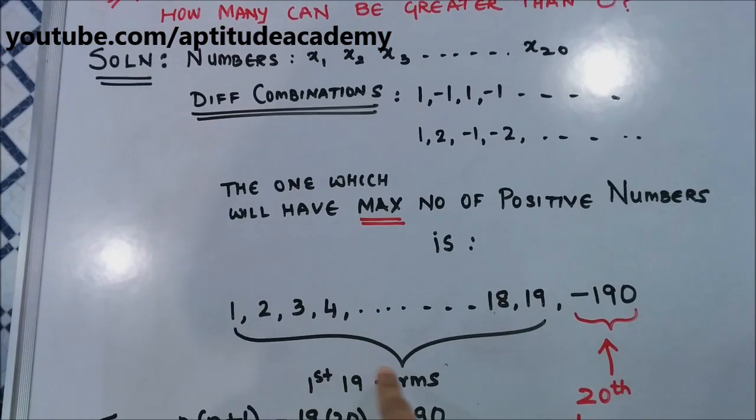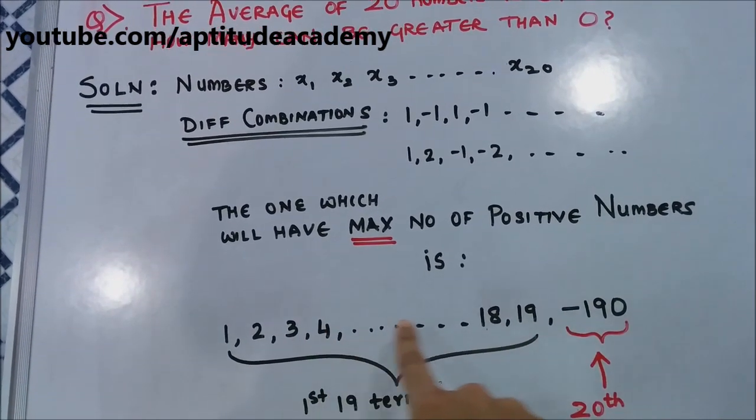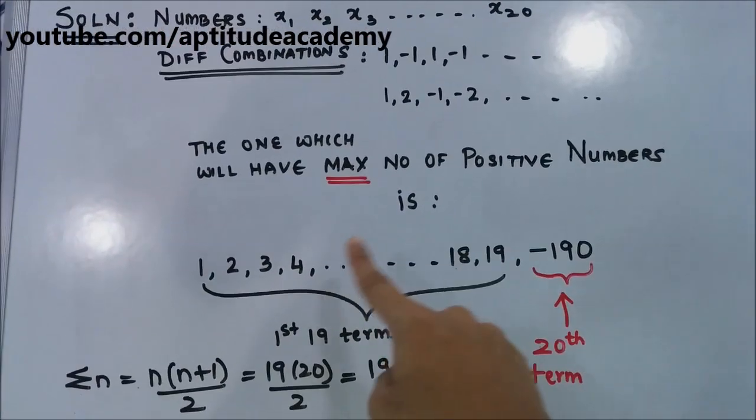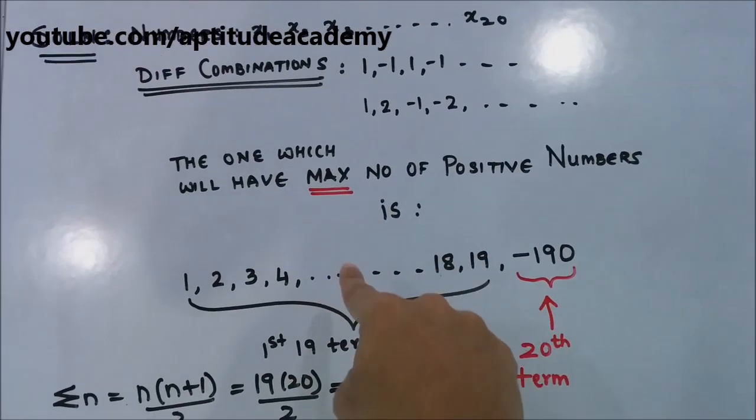Now you could have the first 19 terms as 1, 2, 3, 4, up till 19. And the 20th term will be the negative summation of all of these 19 terms. Right?